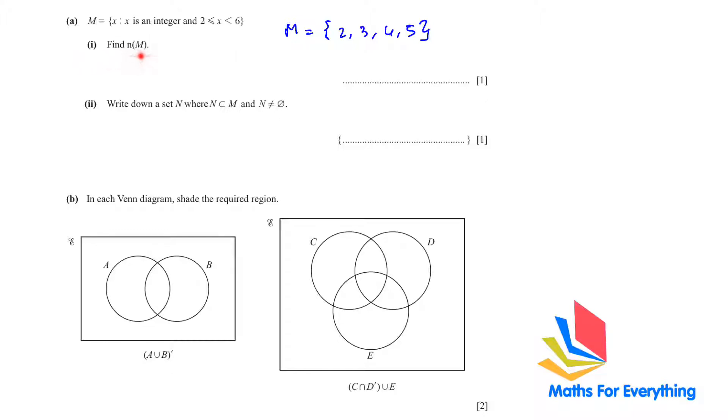A1, find nM. When it is written like that it means we have to find the number of elements in M. We can see that there are 4 elements, so the answer is 4. A2, write down a set n where n is a subset and n is not equal to the empty set. You can write any element from here. So n is equal to 2, 3.